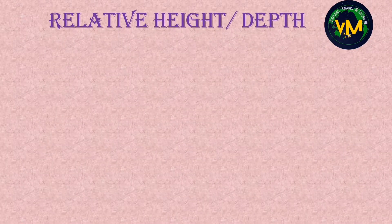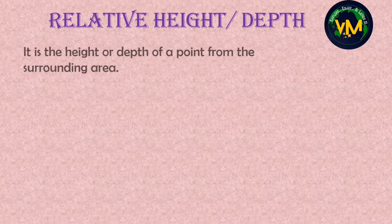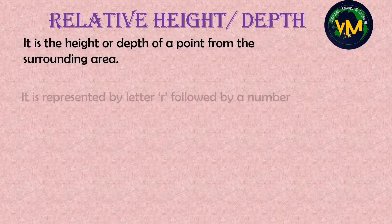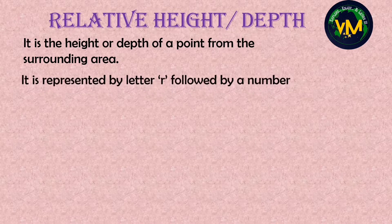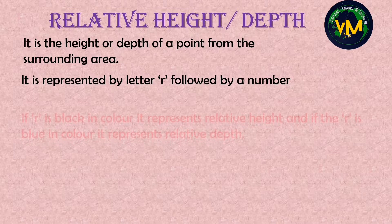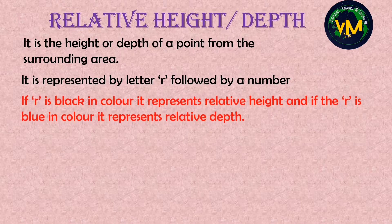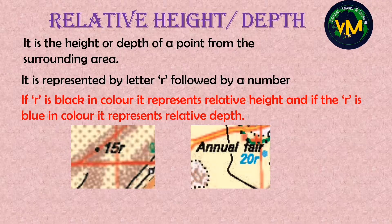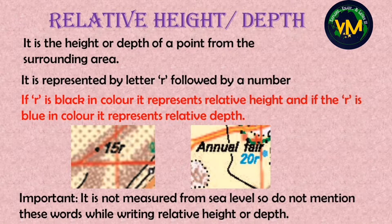Next we move on to the second type of height: relative height or depth. It is the height or depth of a point from the surrounding area, usually measured from top to bottom. It is represented by the letter R followed by a number. From a board exam point of view, if you see the letter R in black color, write relative height. But if this R is blue in color, you have to write relative depth. Very importantly, do not use the words 'above sea level' when you write relative height or depth.